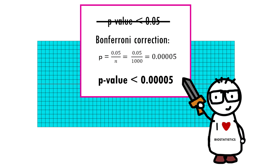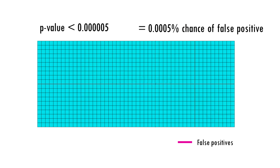With the Bonferroni correction, we use a p-value of 0.05 divided by a thousand, so 0.00005. There is a 0.005% chance that we are wrong and the gene is actually not associated with being a morning person.